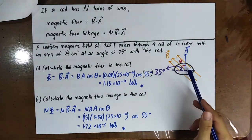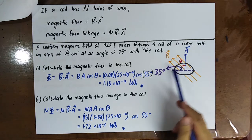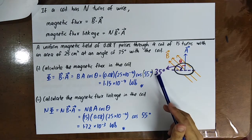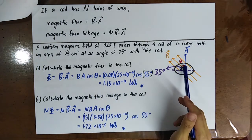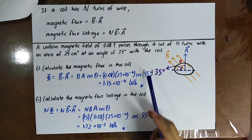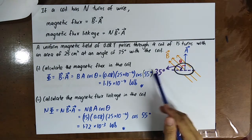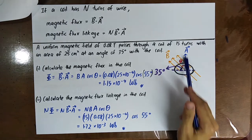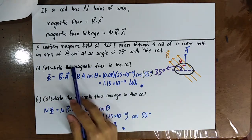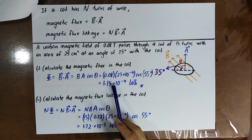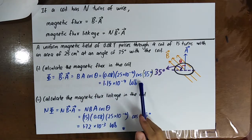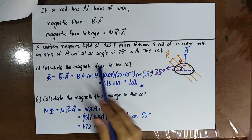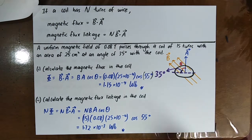The angle between B and the area vector is 55 degrees, which is 90 degrees minus 35 degrees. Always make sure theta is the angle between B and the area vector. The magnetic flux is 1.15 times 10 to the power of negative 4 Weber. This is the unit for magnetic flux and also for magnetic flux linkage.